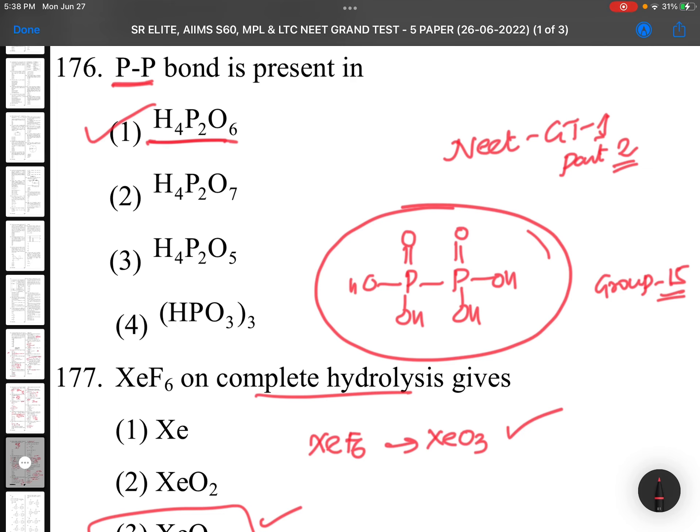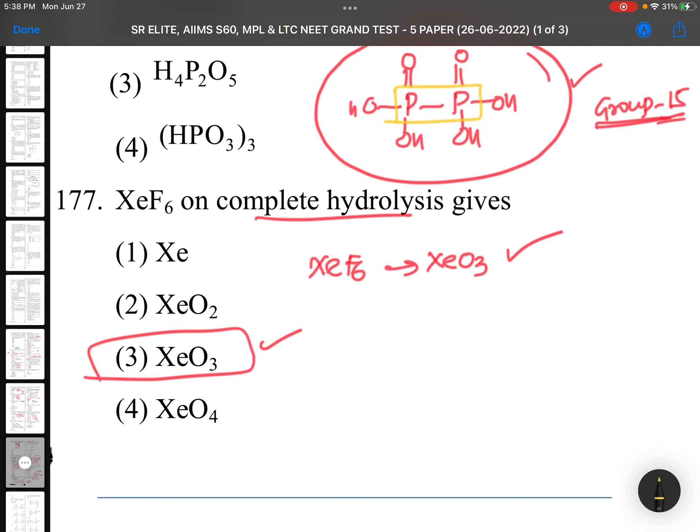Question 176: P-P bond is present in - PP means phosphorus-phosphorus bond. You can see the structure here, I mentioned the structure. It is of group 15. There is PP bond, phosphorus-phosphorus bond you can notice here. So H4P2O6 is the answer. Just see all the structures of phosphorus oxy acids.